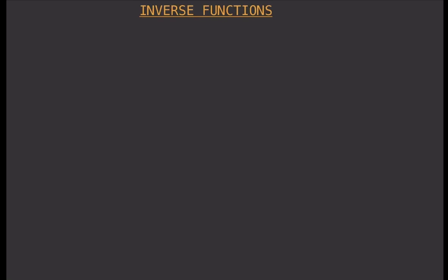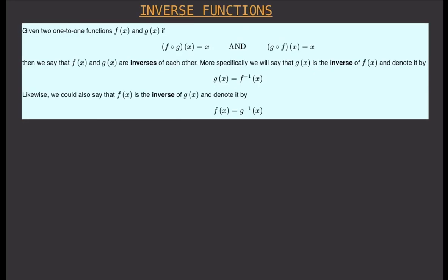What are inverse functions and how do we know if two functions are inverses of each other? Given two one-to-one functions — and it's important to highlight this: this only works if your functions are one-to-one. So given two one-to-one functions f(x) and g(x), if f(g(x)) equals x and g(f(x)) equals x, then we say that f(x) and g(x) are inverses of each other.